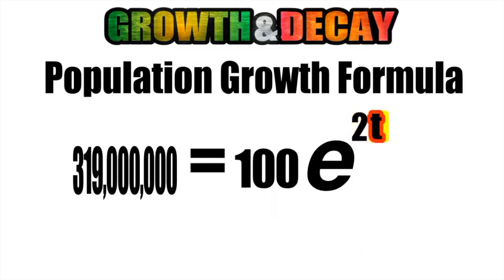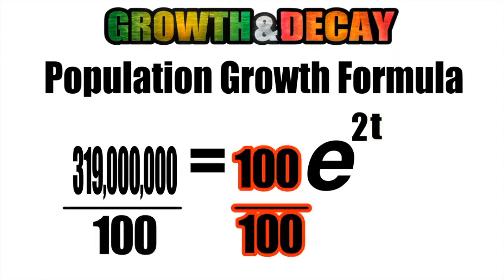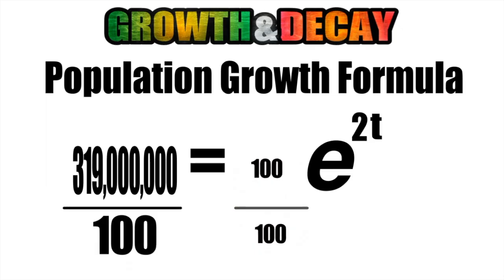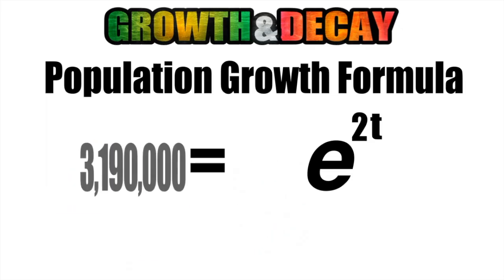And finally, t, which represents time, is what we are trying to solve for. We want to figure out how long it would take. So we're just going to leave t by itself for now. Now, we can simplify this by dividing both sides by 100. Of course, on the right side, those 100s will cancel out. On the left side, our quotient is 3,190,000.